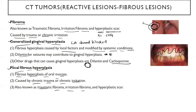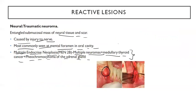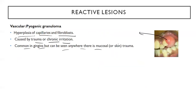Let's have a quick review. Fibroma mainly happens because of trauma, also known as hyperplastic scar or irritation fibroma. Generalized gingival hyperplasia can be caused by drugs like dilantin, calcium channel blockers, and cyclosporine. Focal fibrous hyperplasia mainly happens because of hyperplasia of the oral mucosa. Denture-induced hyperplasia is mainly because of ill-fitting dentures and can be seen in the vestibule as epulis fissuratum or in the palate as papillary hyperplasia. Traumatic neuroma is a neural reactive lesion caused by injury to the nerve. Pyogenic granuloma is mainly because of hyperplasia of capillaries and fibroblasts caused by trauma or chronic irritation, and is common in the gingiva but can be seen anywhere.